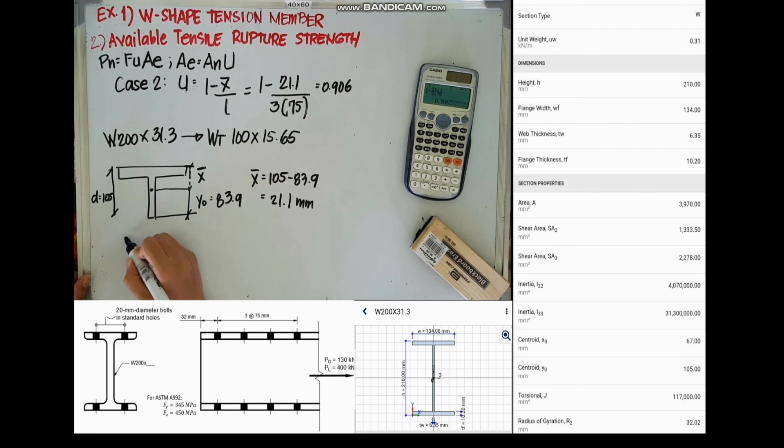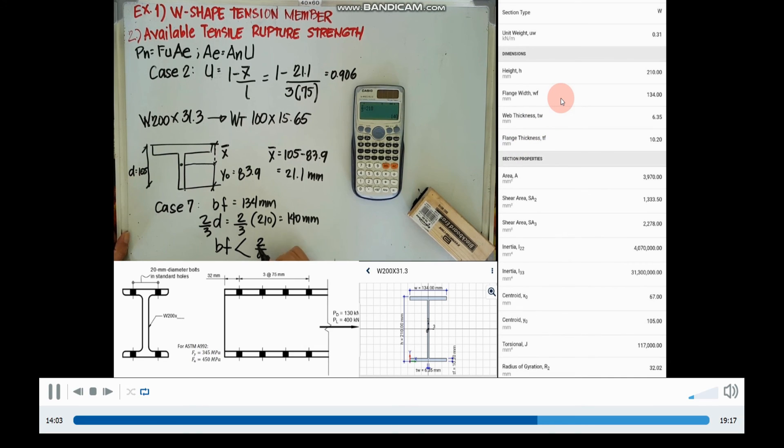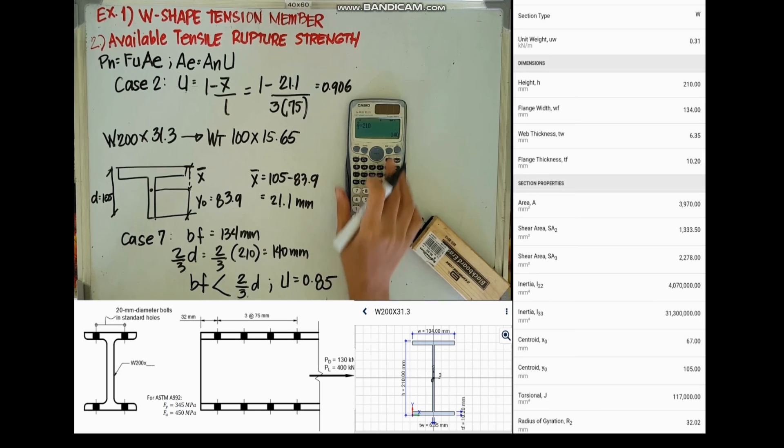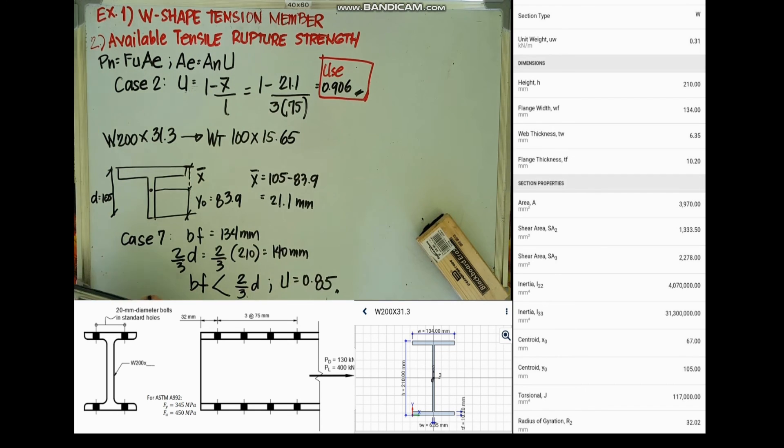And for case 7, the BF of this section is 134, and then we compare it to 2/3 of the depth. The shear lag factor is 0.85. We will consider whichever is greater. Since 0.906 is larger, we will use that.